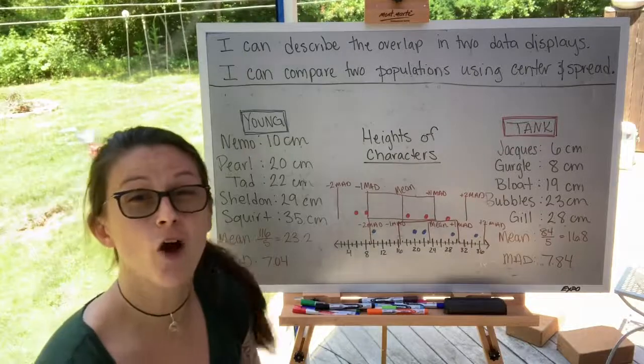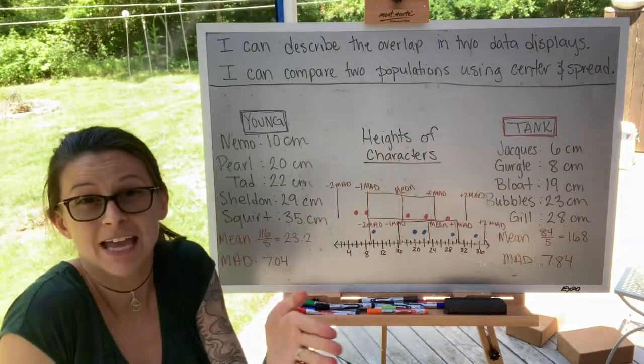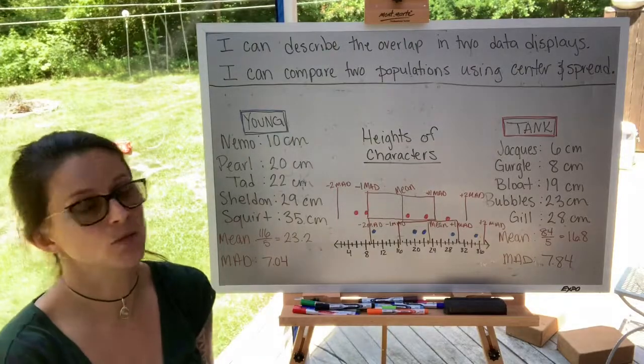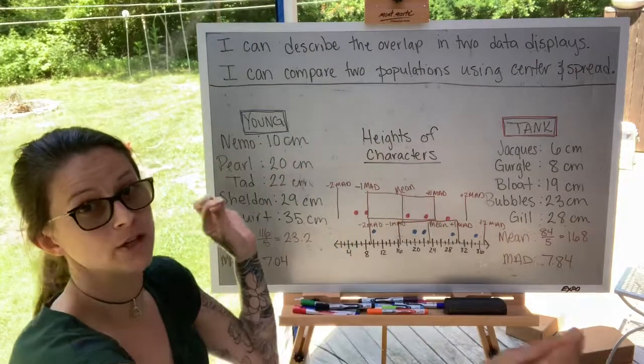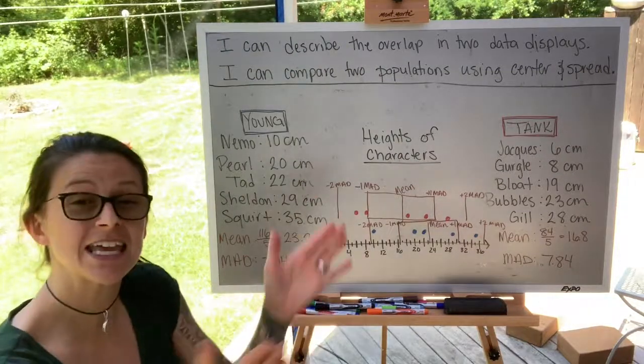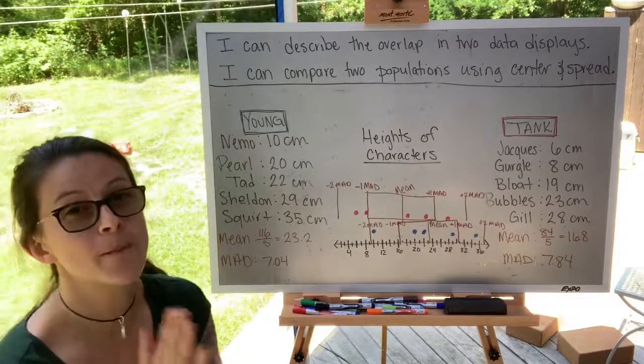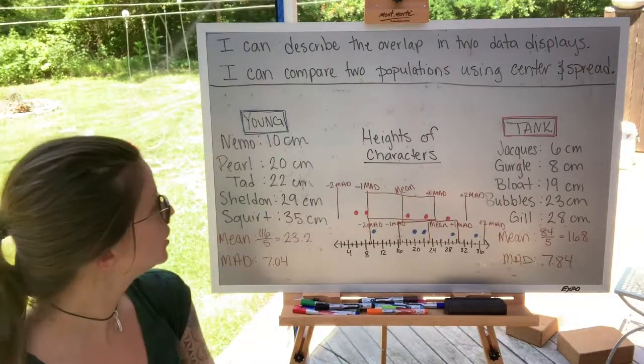None of our characters fall outside two mean absolute deviations from the mean, and if they did, we might say, are they an outlier? And it might skew our data, unless we had one on each side. So that's sometimes tricky. That's why we use the spread to see how close together our data is and how far apart it is from the middle, from the center.